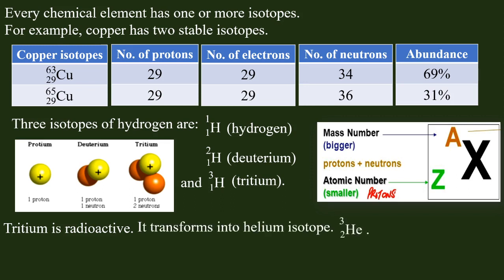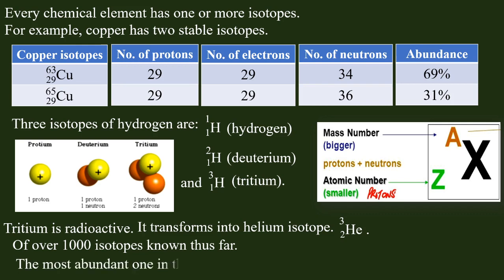Tritium (1H3) transforms into helium isotopes. Over 1,000 isotopes are known thus far. The most abundant one in the entire universe is the hydrogen isotope 1H1.